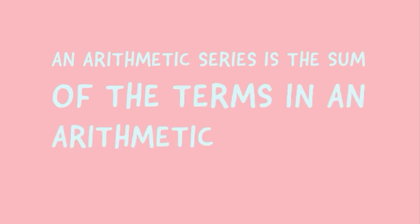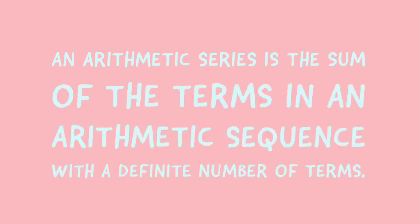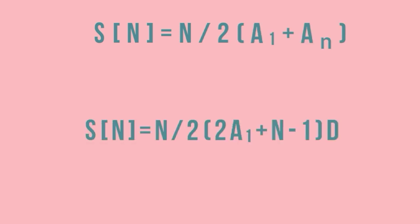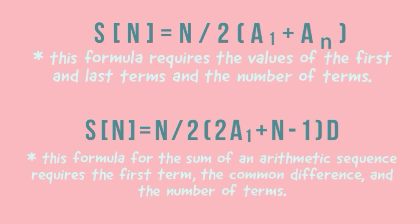Now let us proceed to arithmetic series. An arithmetic series is the sum of the terms in an arithmetic sequence with a definite number of terms. We have two formulas for getting the sum. The first is: s sub n equals (n divided by 2) times (a sub 1 plus a sub n); this requires the first term, last term, and number of terms. The second is: s sub n equals (n divided by 2) times (2a sub 1 plus (n minus 1) times d); this requires the first term, common difference, and number of terms.